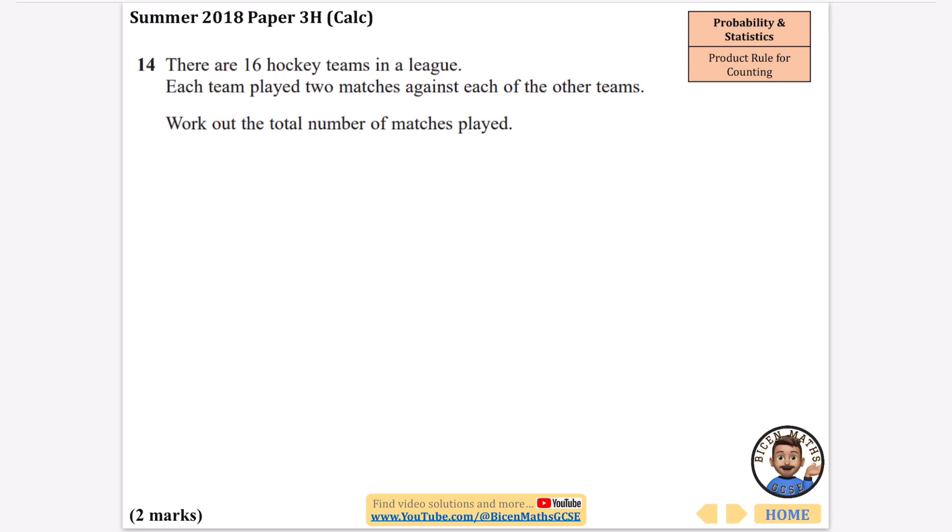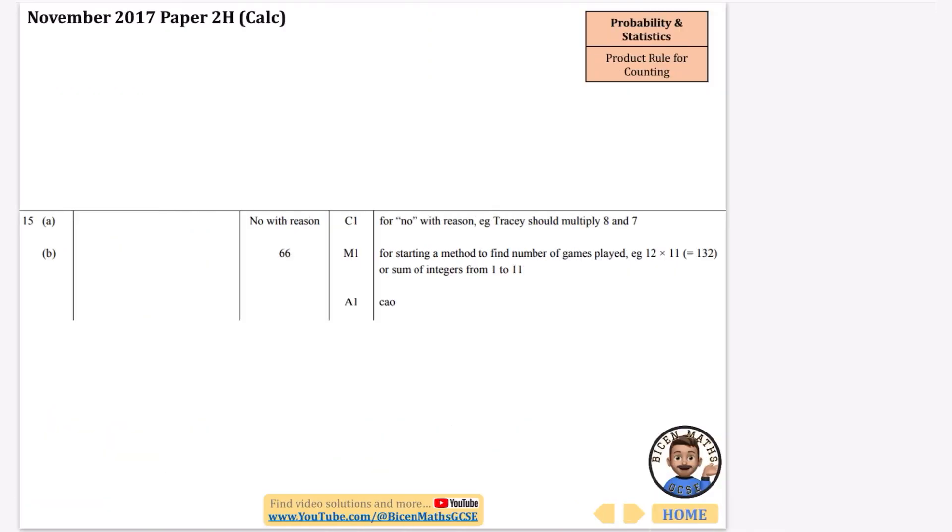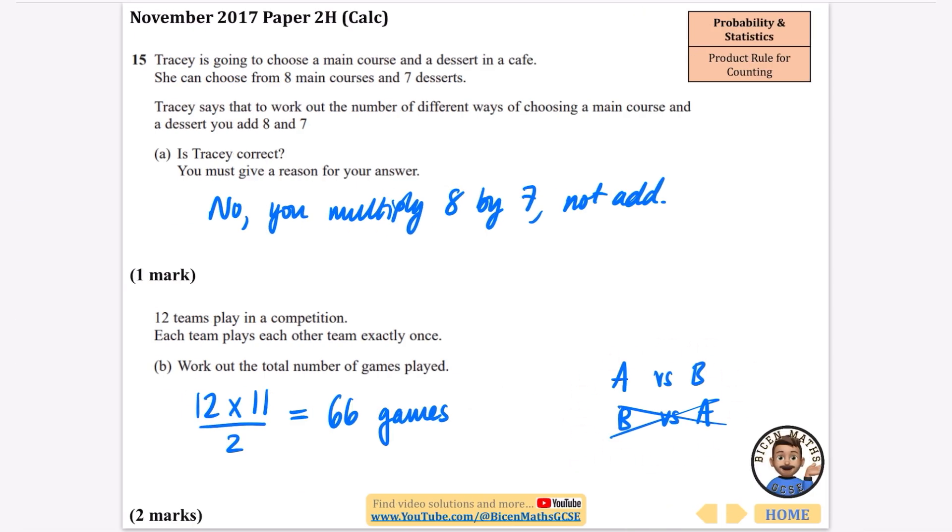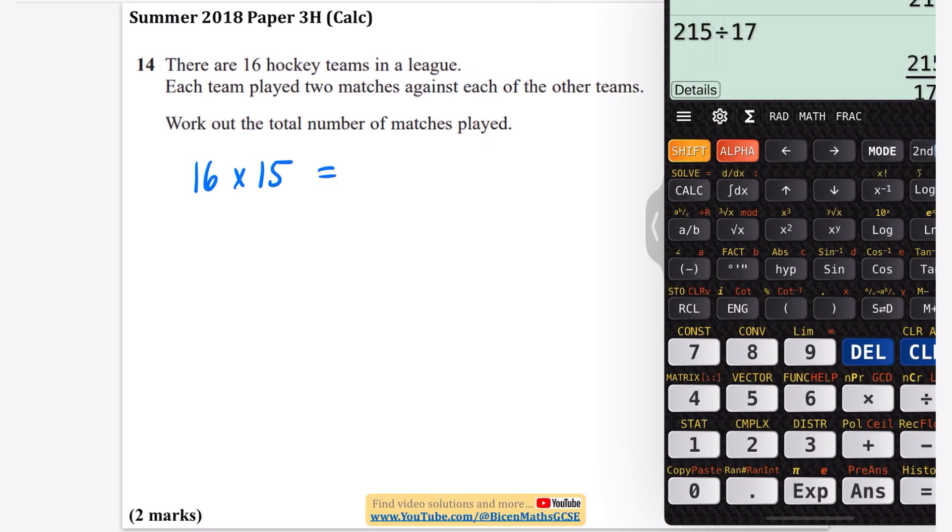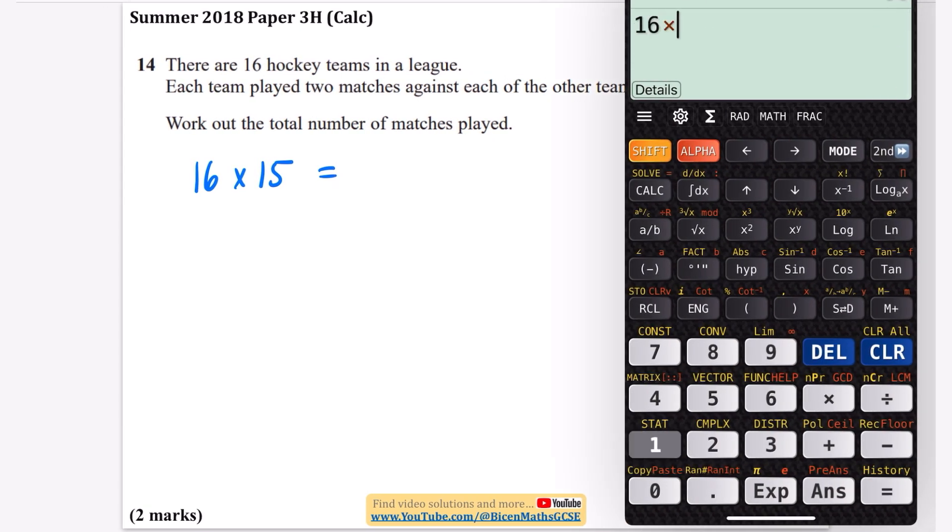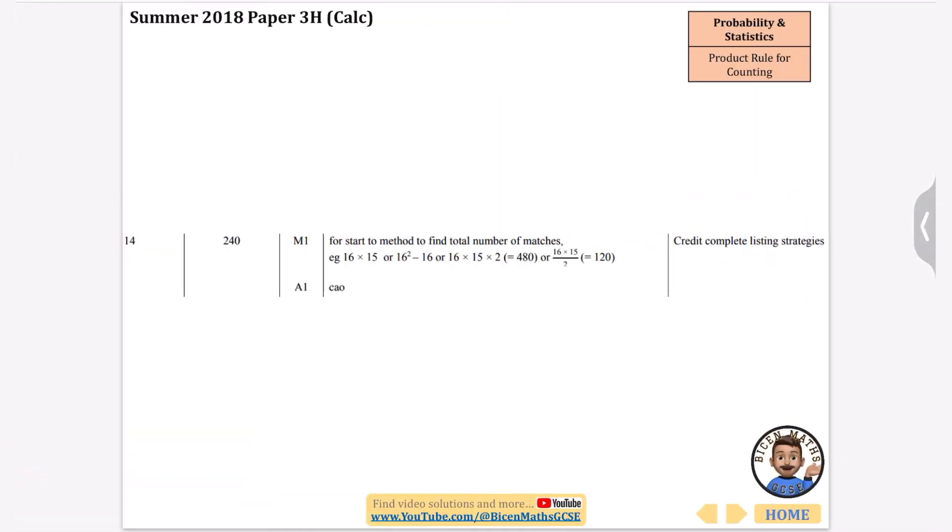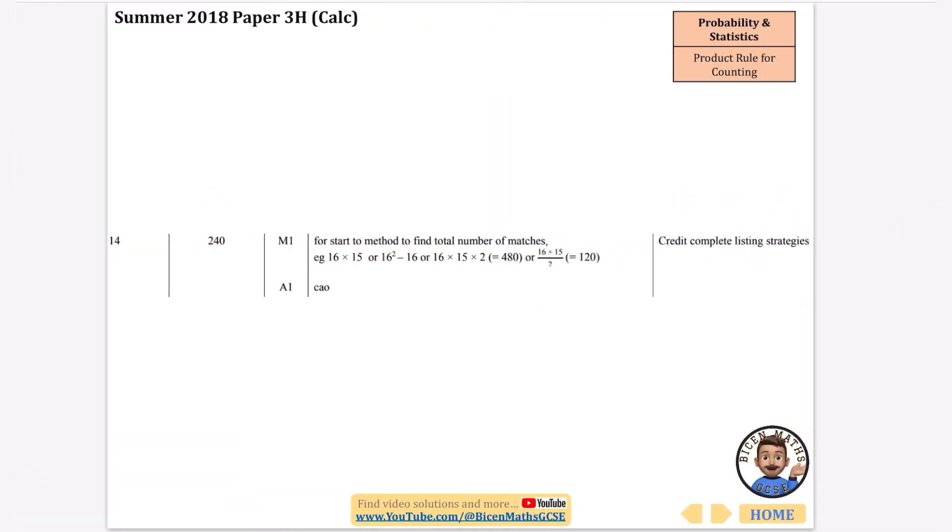So we've got another one about a league. It says there are 16 hockey teams in a league. Each team played two matches against each of the other teams. Work out the total number of matches played. I'm not going to need to divide by two here because each team a v b is going to do two matches, which is the same as b v a, like you have home and away matches. So I'm going to do 16 for the first team and then 15 other teams left. No dividing by two required for this one, and 16 multiplied by 15 is 240 matches. Let's check it - yeah we've got the 240 right there and we definitely didn't want that divide by two.